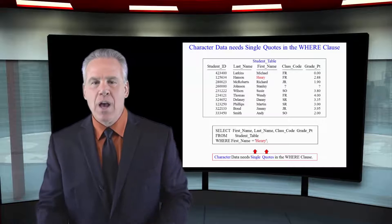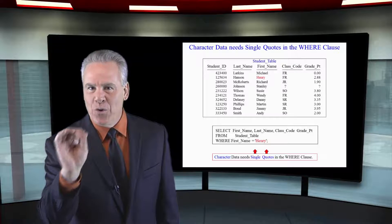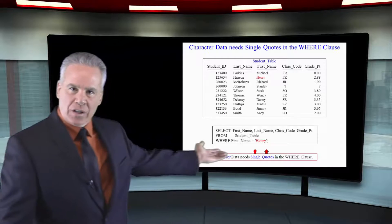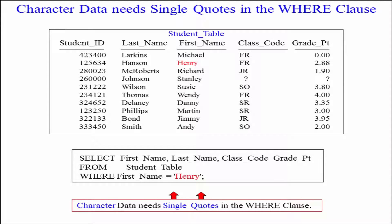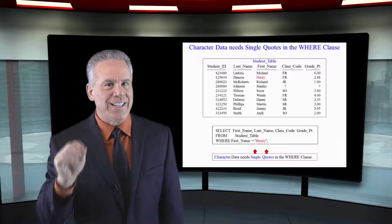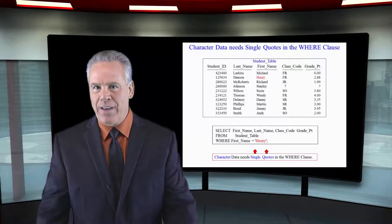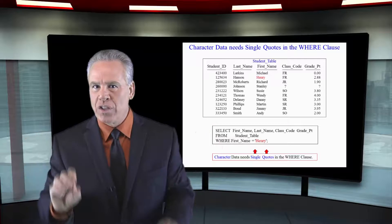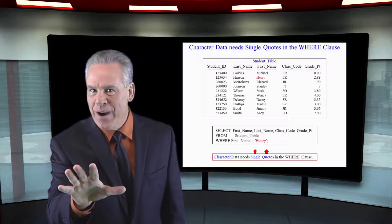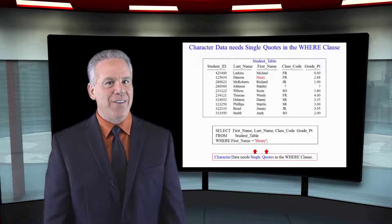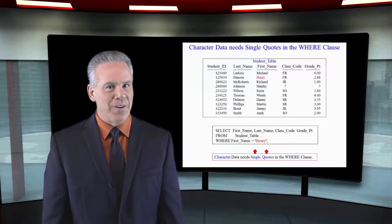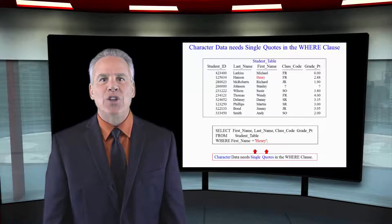Remember, we'll only have double quotes if we're aliasing and there's a space or it's a reserved word. We will always have single quotes in a WHERE clause where the data is character data — for example, WHERE first name equals 'Henry'. If it's a number in the WHERE clause, we won't need any quotes at all. So: double quotes on aliases, single quotes on character data, and no quotes for numbers.